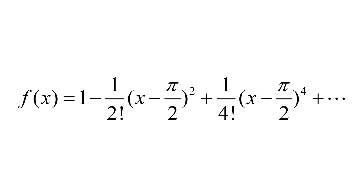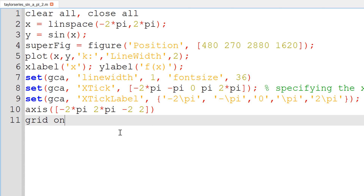So in the Taylor expansion, f(x) equals 1, and since c_1 equals 0 the second term vanishes. c_2 is minus 1 over factorial of 2, giving minus 1 over factorial of 2 times (x minus pi over 2) squared. c_3 is 0, and c_4 is 1 over factorial of 4 times (x minus pi over 2) to the power of 4, and we can continue. So essentially, f(x) equals 1 minus 1 over factorial of 2 times (x minus pi over 2) squared plus 1 over factorial of 4 times (x minus pi over 2) to the power of 4, and so on. To compare with the exact function sin(x), I will start plotting sin(x) again.